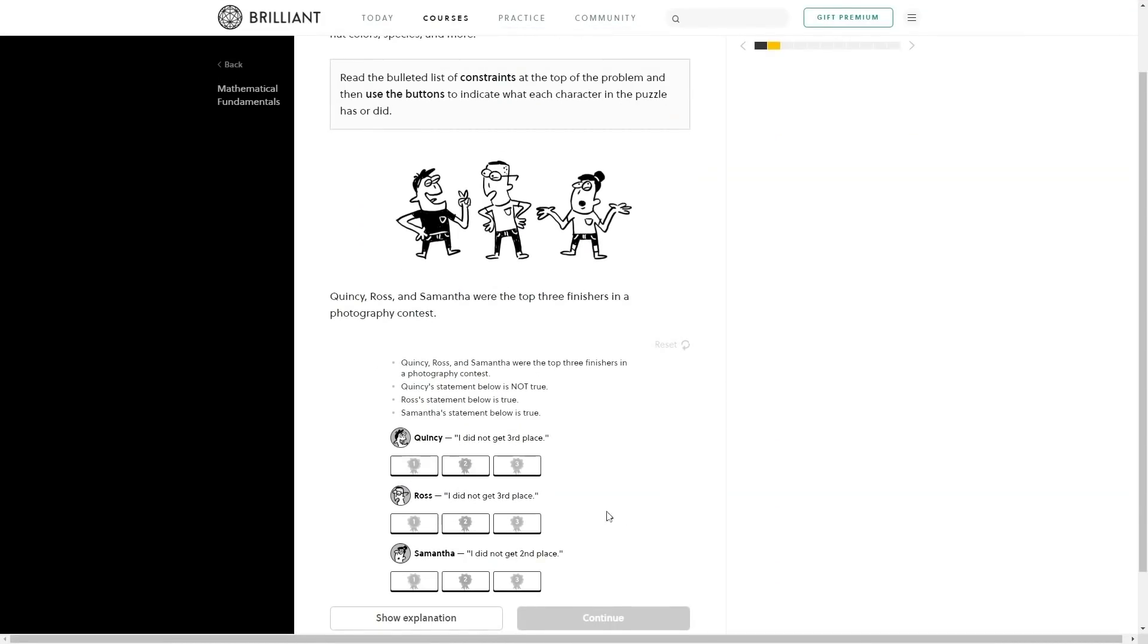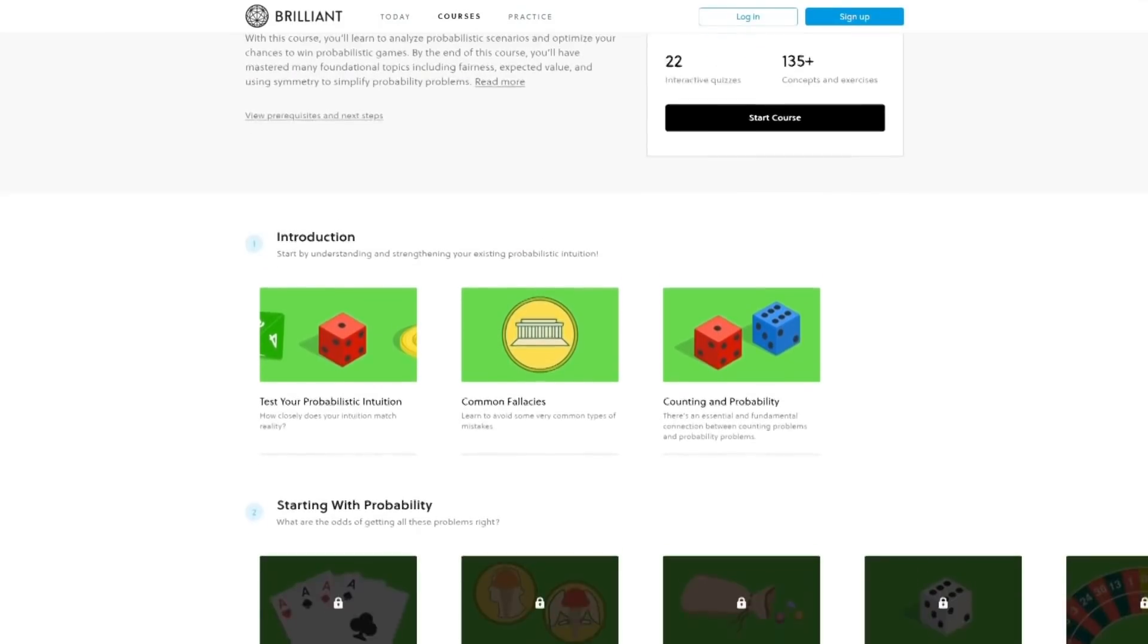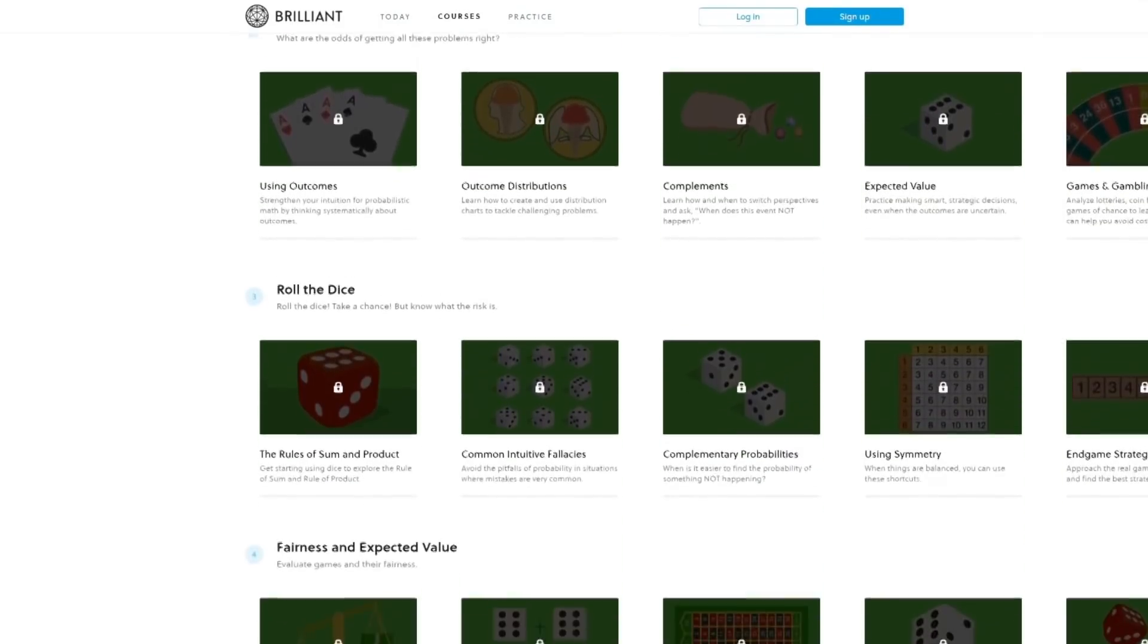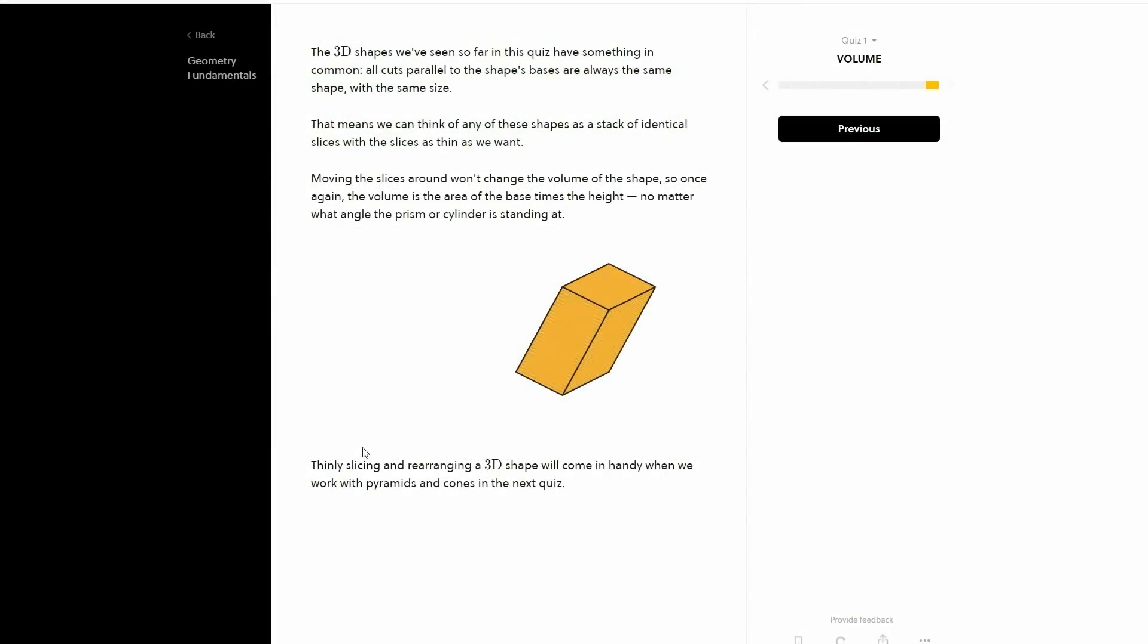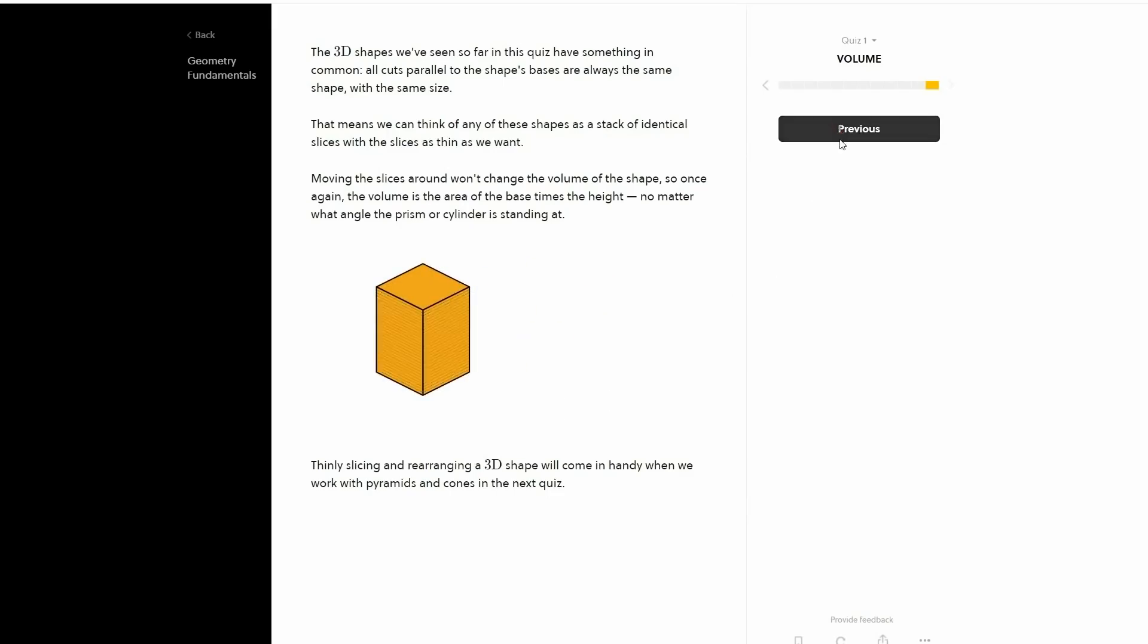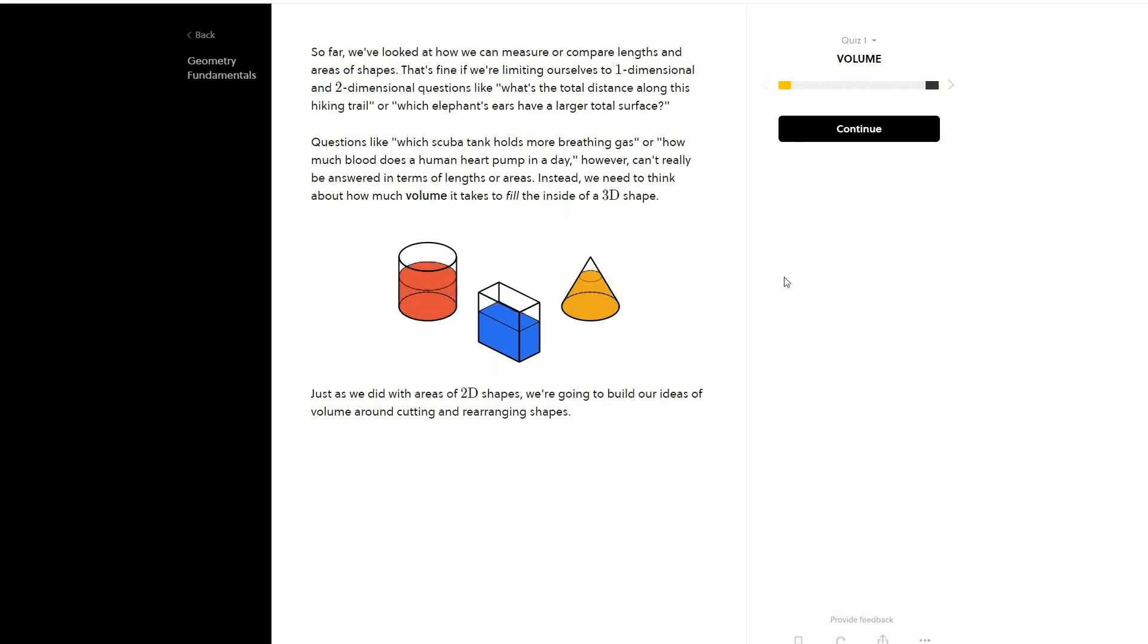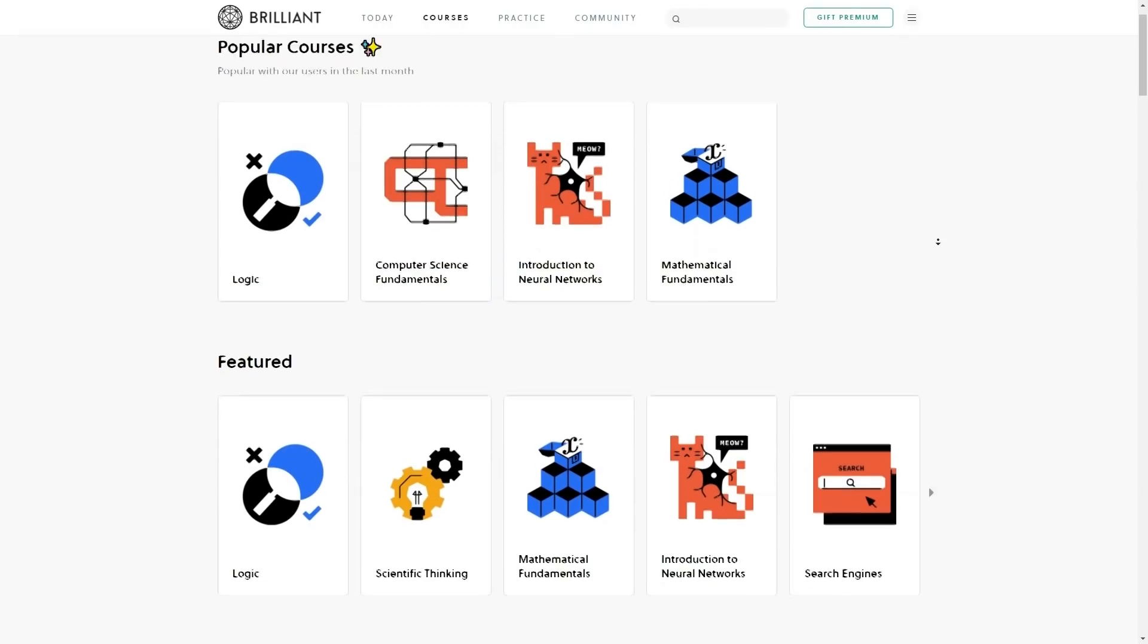Even if you're an absolute beginner, you can start out with classes like Mathematical Fundamentals or Physics of the Everyday, and build your knowledge base up from there to more advanced subjects later, like Calculus, Gravitational Physics, Astronomy, and so much more. Brilliant breaks down complicated subjects like these into easy-to-follow, bite-sized chunks that'll engage you with interactive challenges, clear steps, storytelling, and problems to solve.